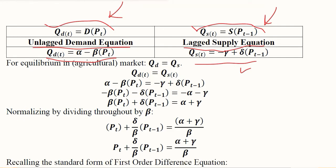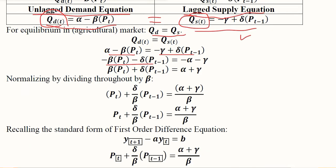Now they are comparable because both have the same time period — Qdt and Qst. Their values are substituted, and after substitution we rearrange so that Pt appears first, then Pt-1, then the constants. However, in the standard form we don't have any coefficient other than 1 on the leading term. So we must get rid of the beta by dividing throughout by beta. When we divide by beta, this beta disappears, while delta gets beta in the denominator, as does alpha plus gamma.